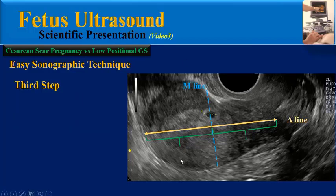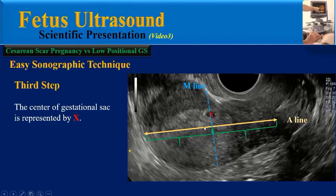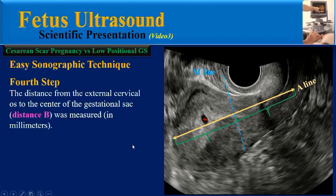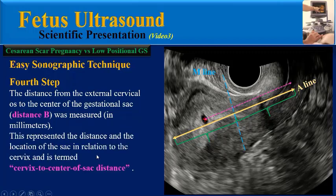In the third step, the center of the gestational sac is represented by the letter X. In the fourth step, the distance from the external cervical os to the center of the gestational sac is measured. This represents the distance and location of the sac in relation to the cervix, and is termed the cervix to center of sac distance, or B line.